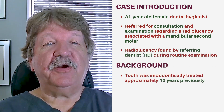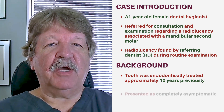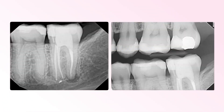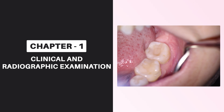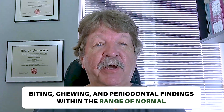The tooth had been endodontically treated about 10 years previously and the patient arrived completely asymptomatic. The referring dentist was concerned that there was a radiolucent finding associated with the distal root apex. Clinical examination showed evidence of prior endodontic access with composite restoration. Patient biting, chewing, and periodontal findings were within normal limits, and the patient had an extremely high dental IQ because obviously she was a hygienist.